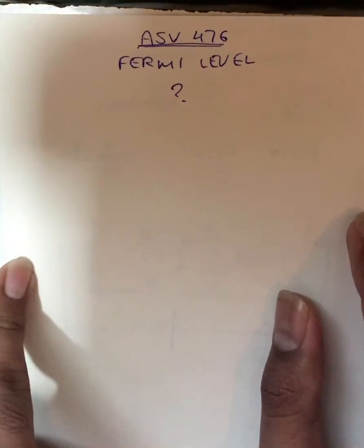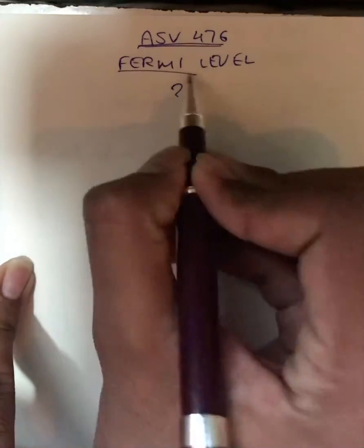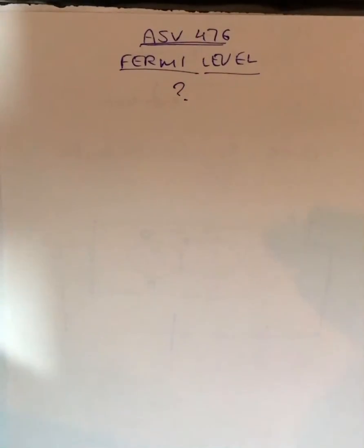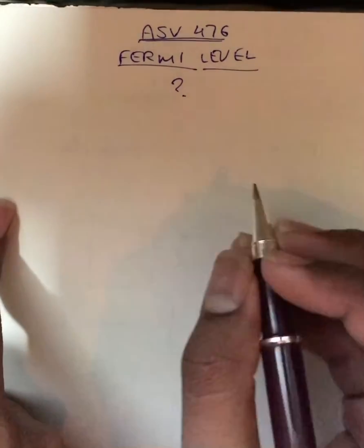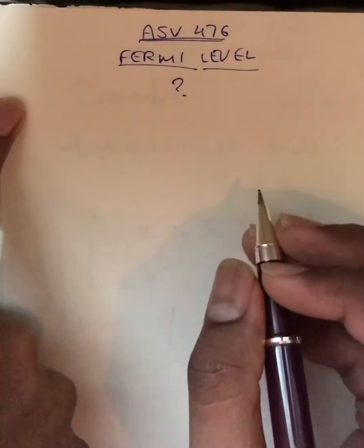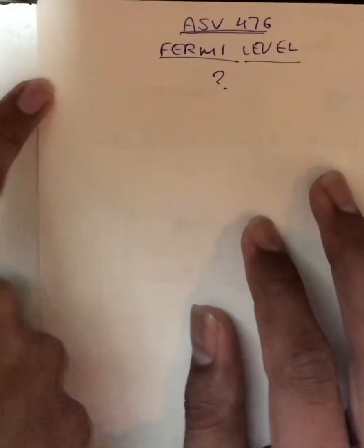So today's topic which we are going to learn is the Fermi level. Fermi level is that level which gives us the probability of finding a majority charge carrier. Now we will understand it in a better way when we take examples.